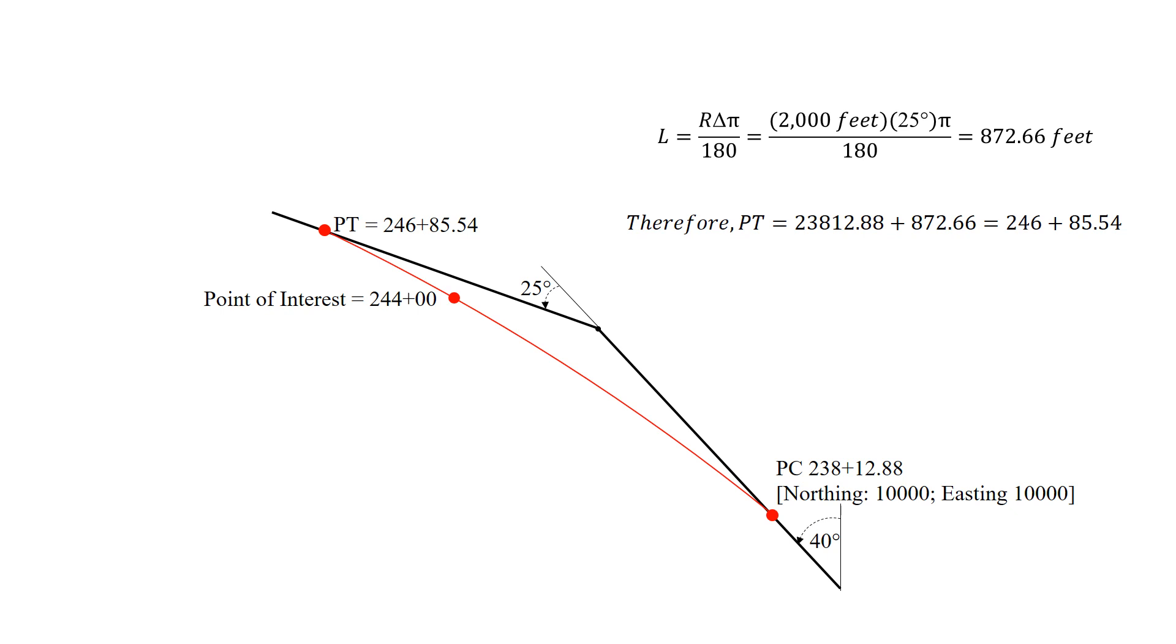Our point of interest is station 244. So this means that our point of interest is on the curve. And this is a very important detail in solving this problem. If it was off the curve, then we would need to use a different process and a more simple process actually to solve this problem.